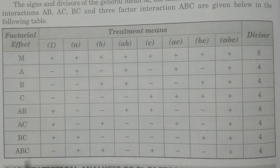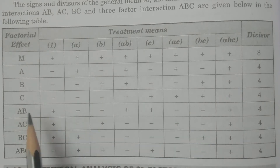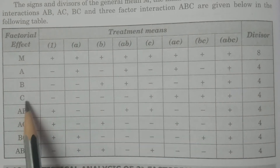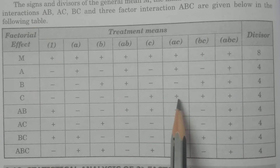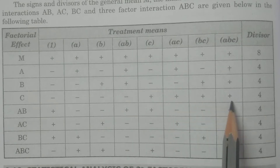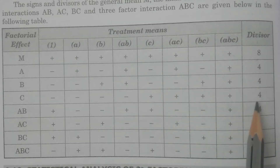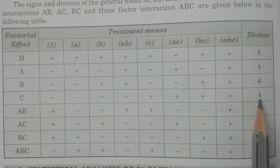Like that, you can easily identify the signs for main effect C: treatments C, AC, BC, and ABC are plus, and the remaining all are minus. Divisor is 4.